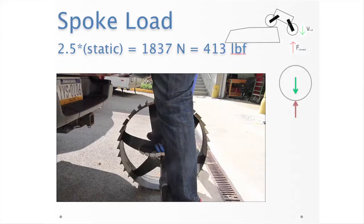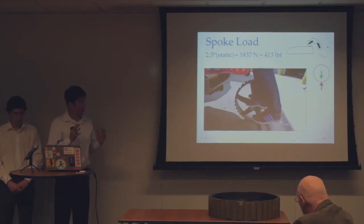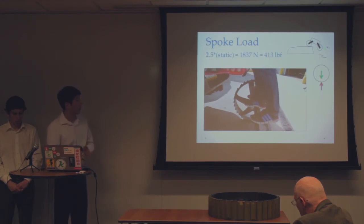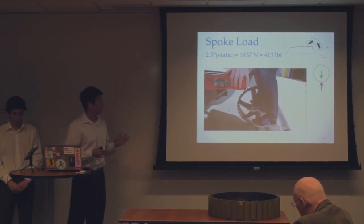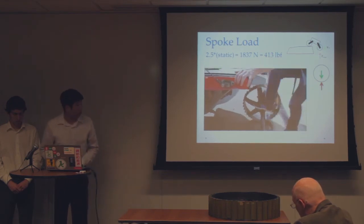The next one is the spoke load. This is if the rover were to fall off of a big rock and land on a single spoke. We calculated it to be around 413 pounds directly over the spokes. We loaded it up, heard some cracking, so we stopped.